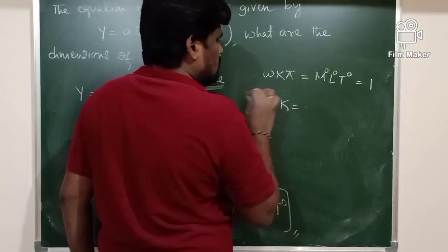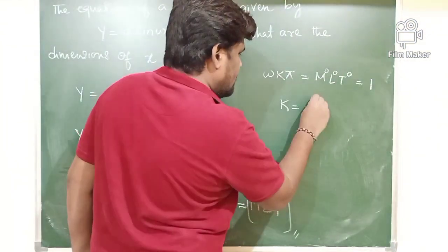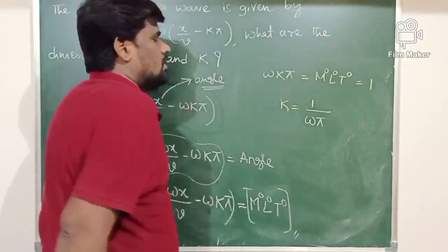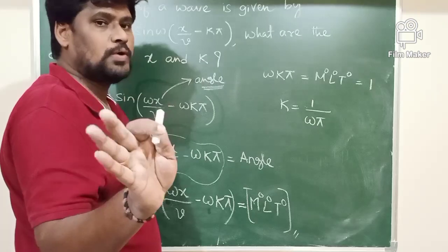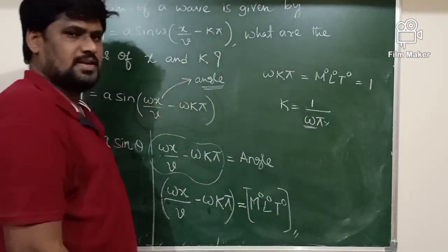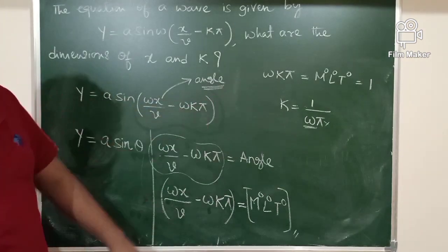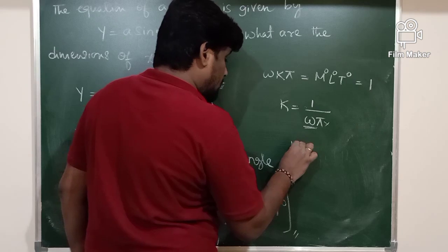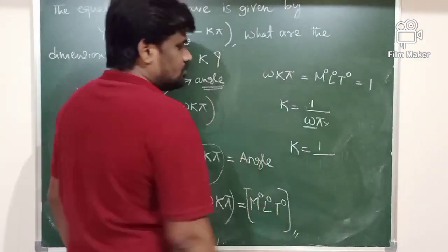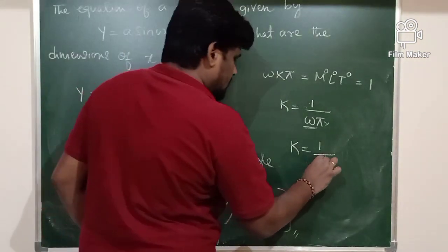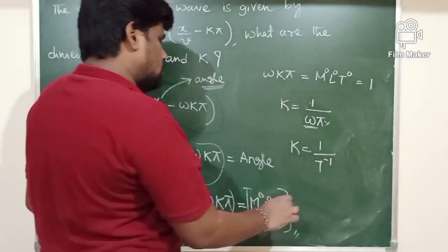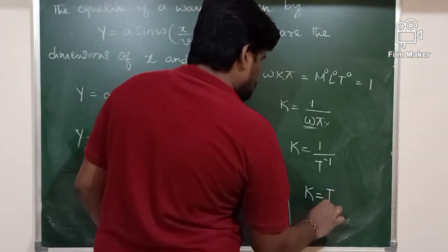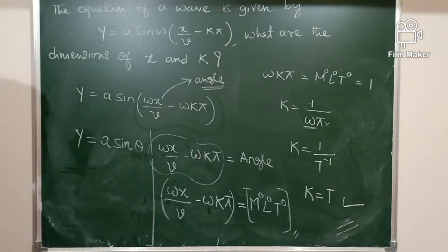K equals 1 divided by ω·π. Pi is an angle and is dimensionless. The dimensional formula of ω is T⁻¹. Therefore, 1/ω gives T, so K has the dimensional formula T¹. These are the dimensional formulas of X and K in the wave equation.